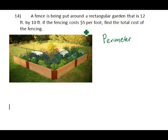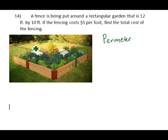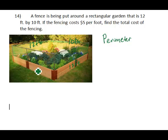Since the garden is known to be 12 foot by 10 foot, we can imagine that one side is 12 foot, the opposing side is also 12 foot, one side is 10 foot, and its opposing side would also be 10 foot.